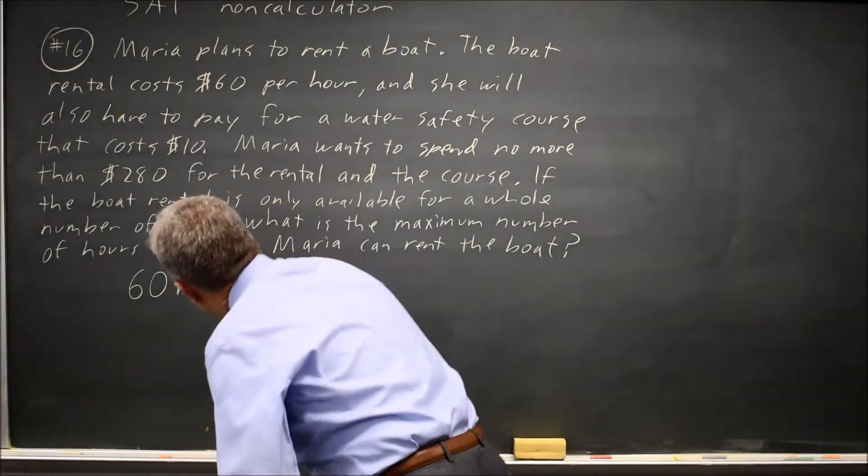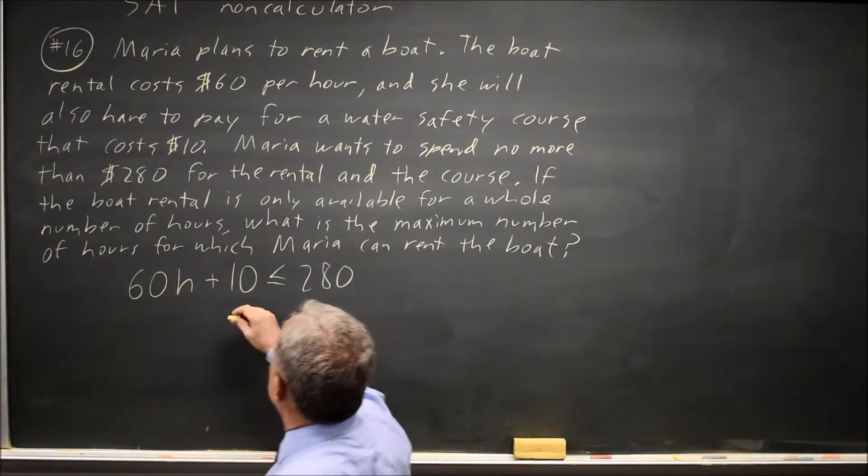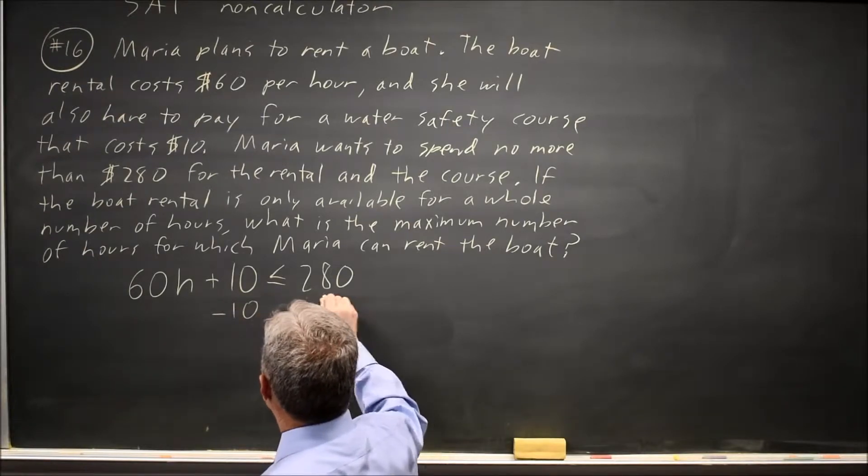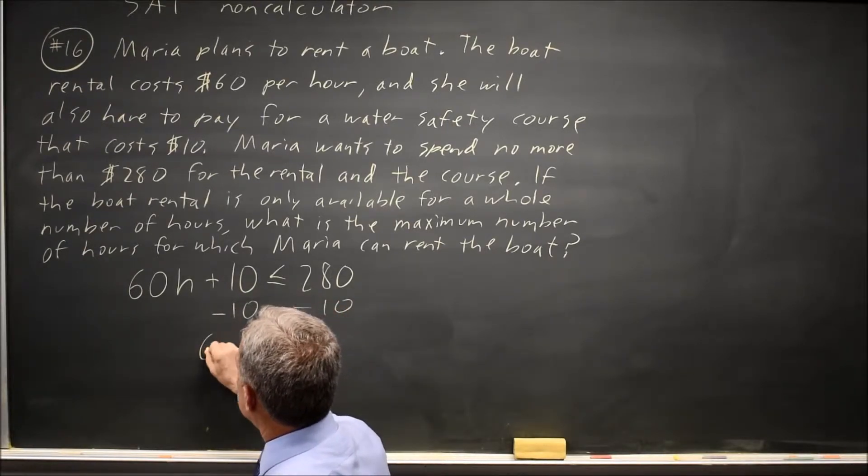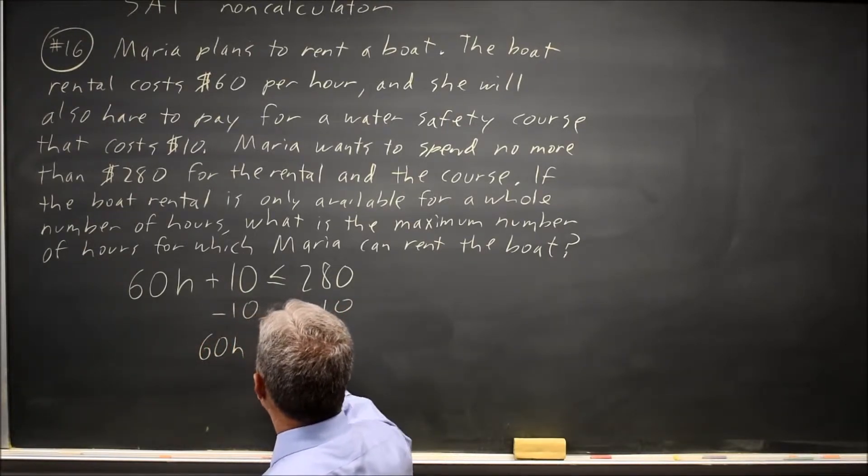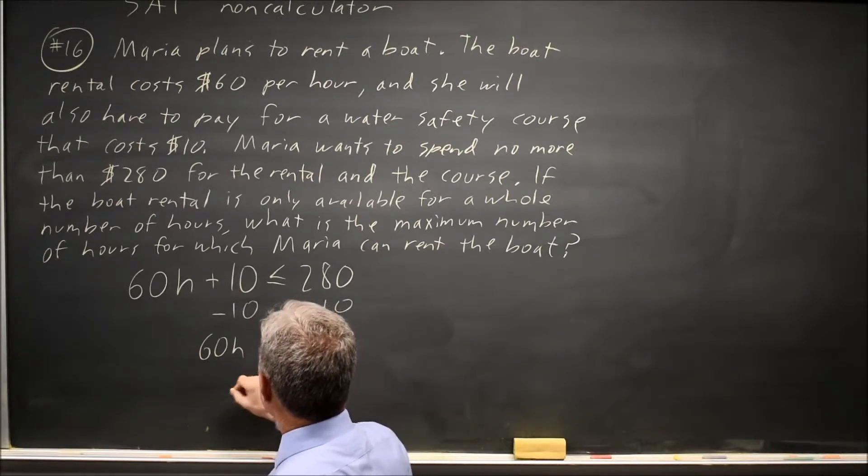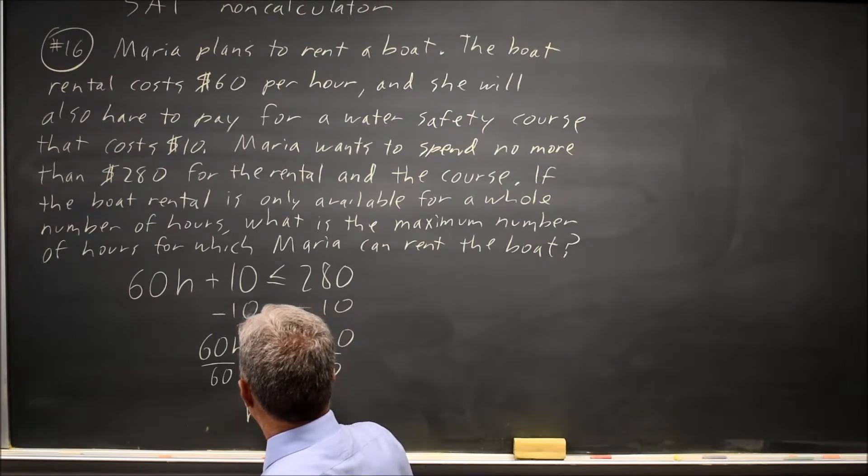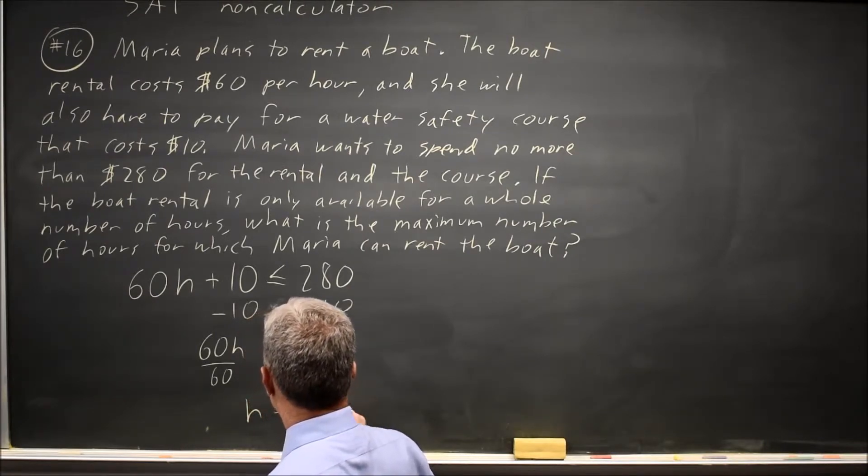So let's solve this by doing the same thing to both sides of the equation. I'll subtract 10, leaving just 60H on the left, less than or equal to 270, divide by 60, and H is less than or equal to 27 over 6.